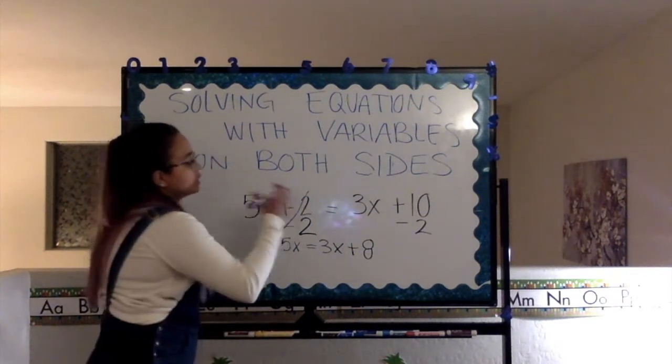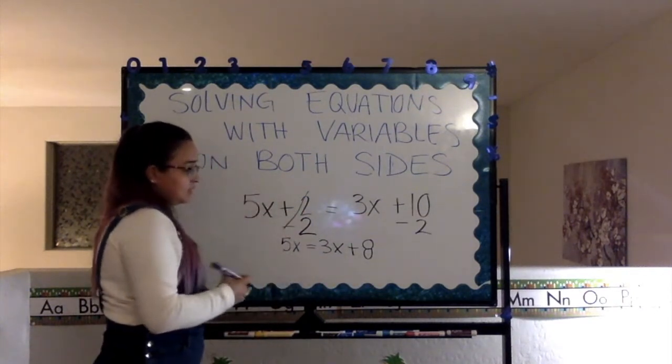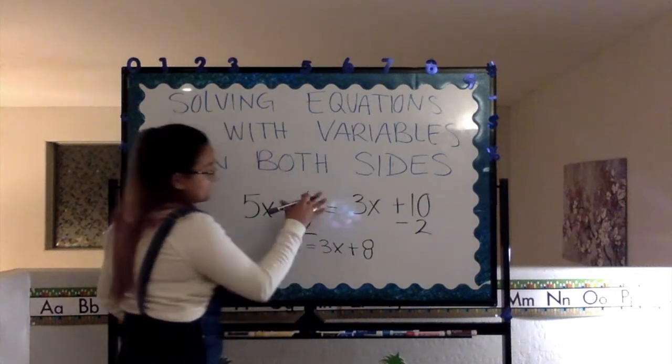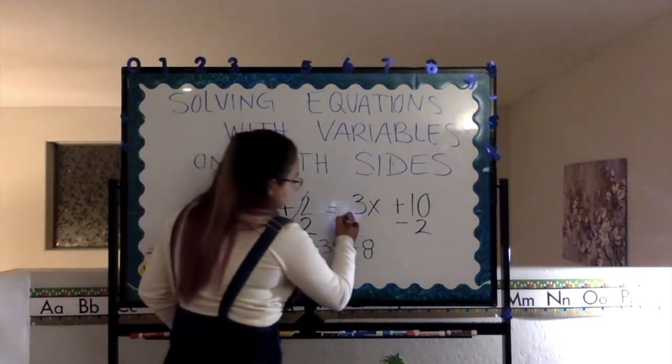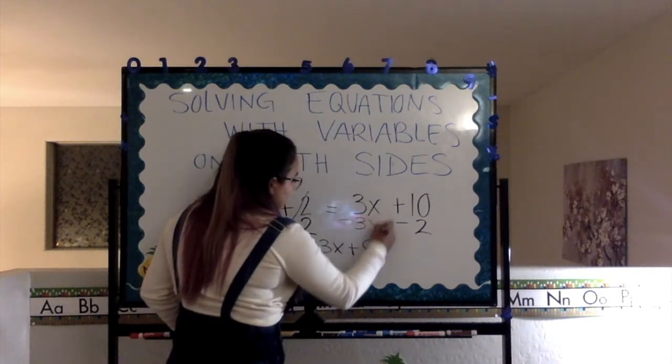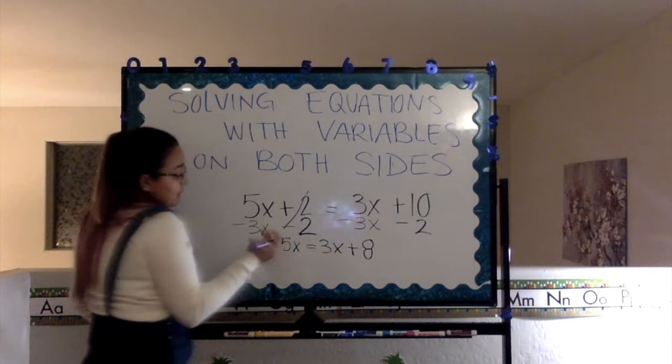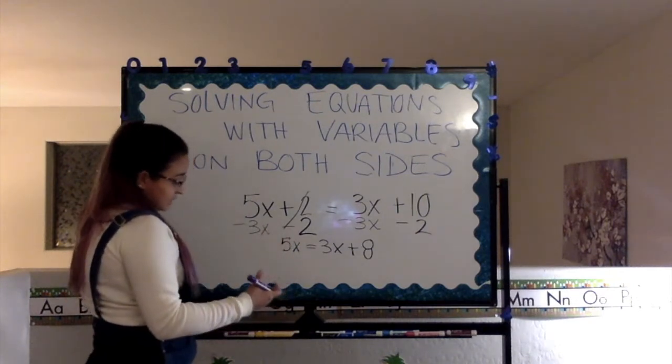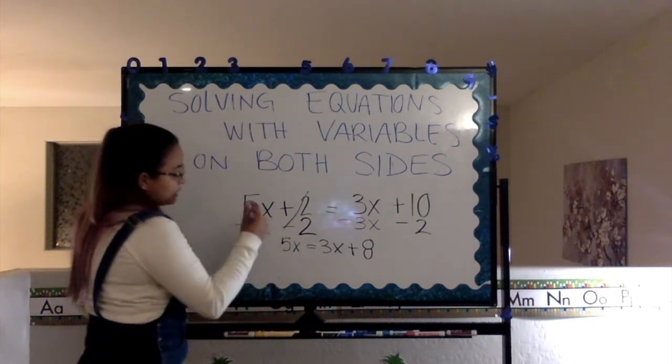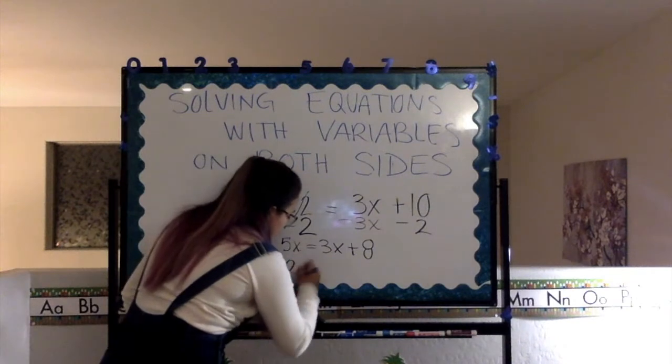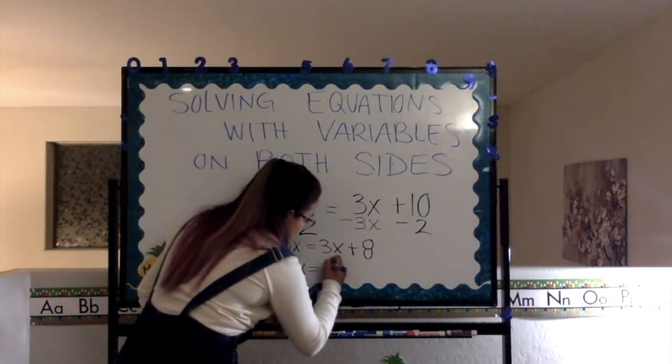Now, what are we going to do with the 3x and the 5x? We are going to do the same thing, but subtract 3x this time. Now that we subtract 3x, we are left with 2x equals 8.